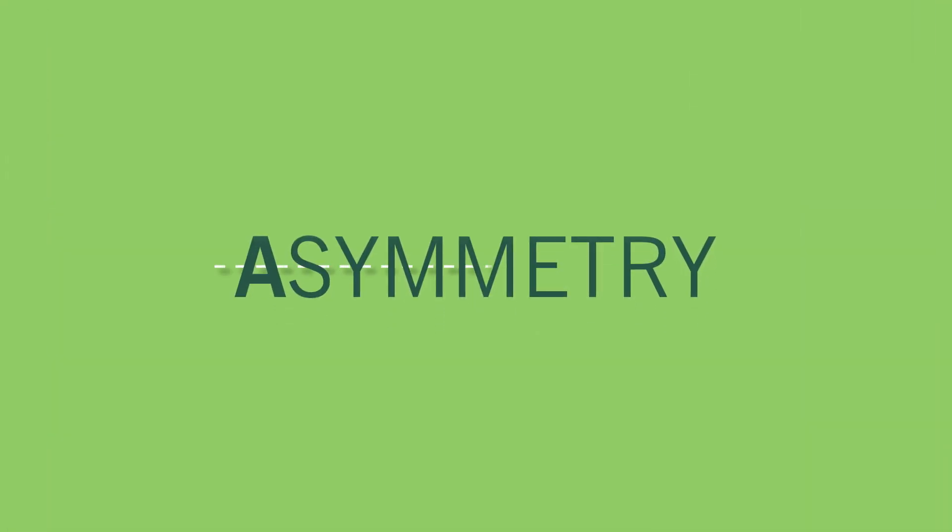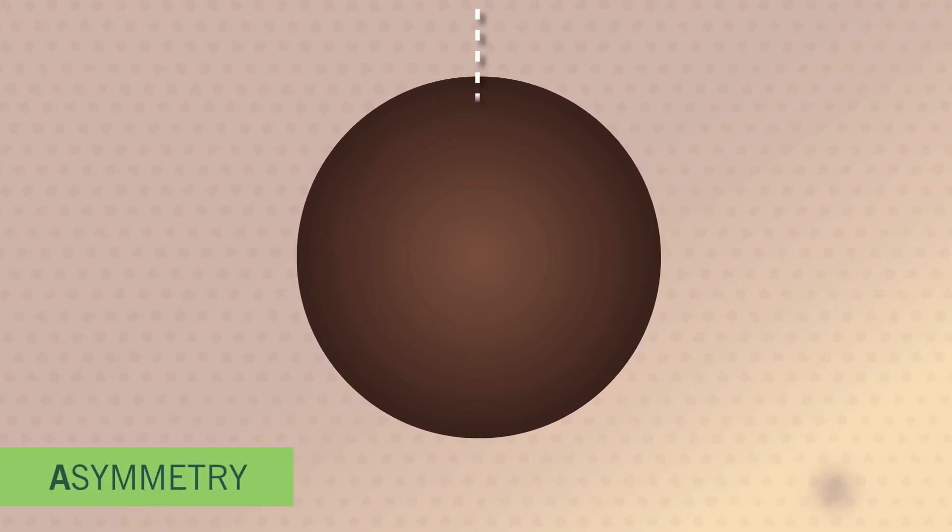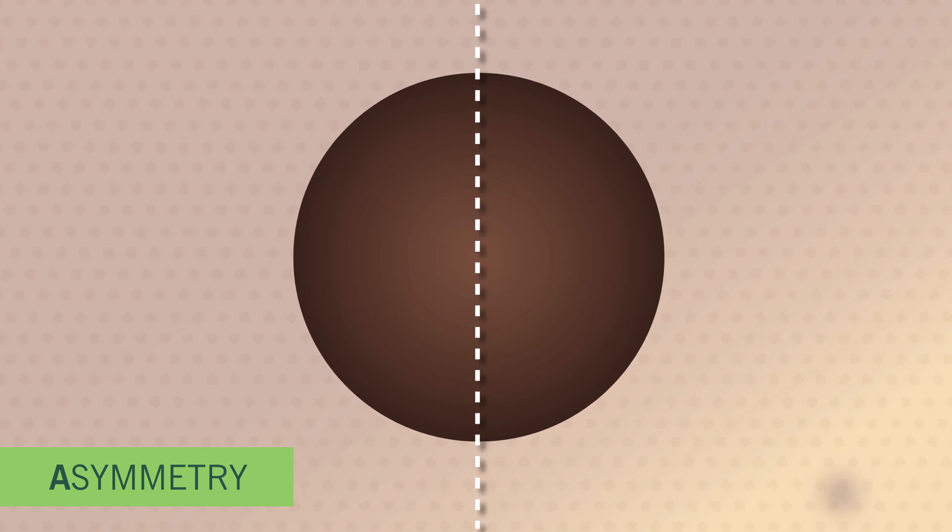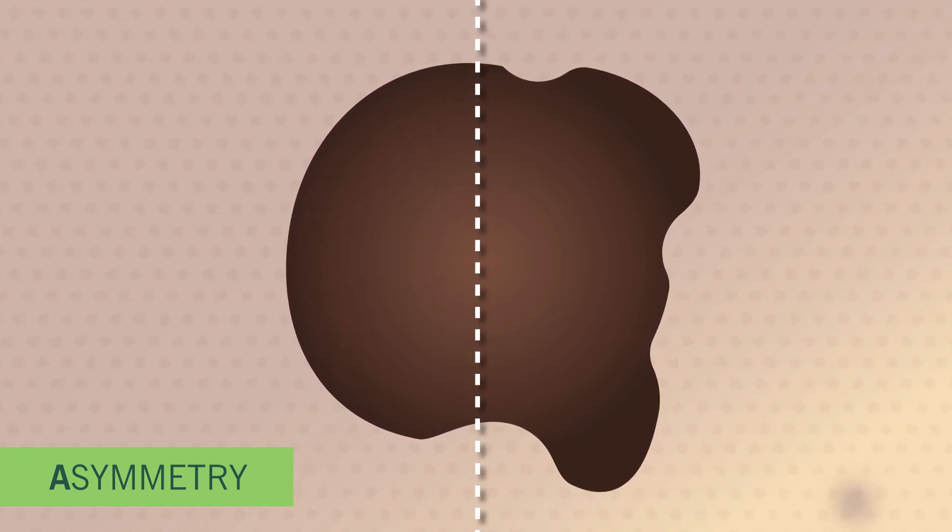A. Asymmetry. Spots on your skin are normally symmetrical. If you draw a line down the middle of a mole or a skin spot, each side should look the same. However, when these two halves don't match, meaning the spot is asymmetrical, that could be signs of a problem.